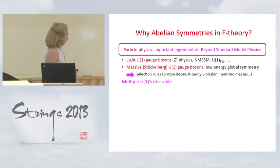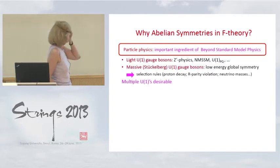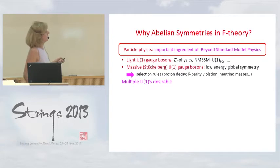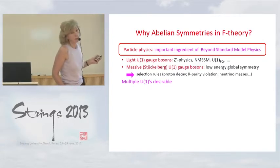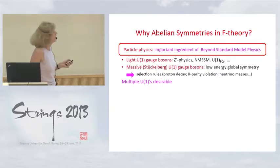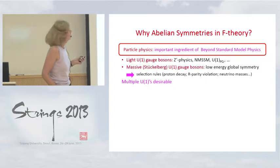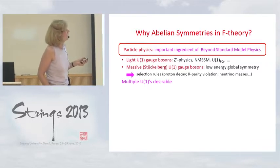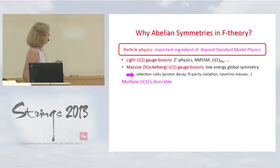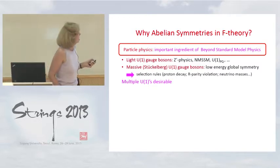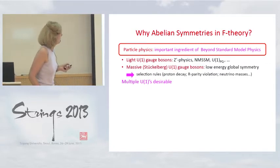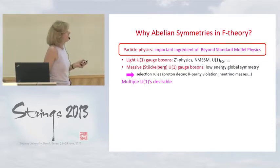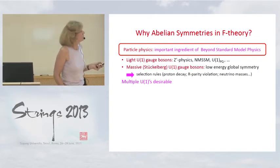Why be interested in abelian symmetries in F-theory? The study of abelian symmetries has important motivation in particle physics. In particular, it is an ingredient often encountered in building models beyond the standard model. For example, if additional U1 gauge bosons are light, this could lead to intriguing augmentation of an MSSM model. If additional U1 gauge bosons are very heavy, there is still a leftover global symmetry, and such additional global symmetry can provide important selection rules to eliminate certain R-parity violating terms, maybe shedding light on neutrino masses.